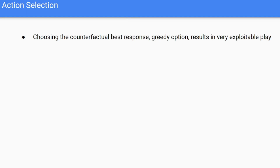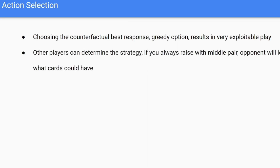This is where we choose the action that has the highest regret in our information set. Why is this bad? Other players can actually determine the strategy — if the bot always raises a certain amount in a certain situation, the opponent can eventually learn what kind of cards they have. So choosing based on the distribution or the probability is the better option: if it's 90% fold, we fold 90% of the time.